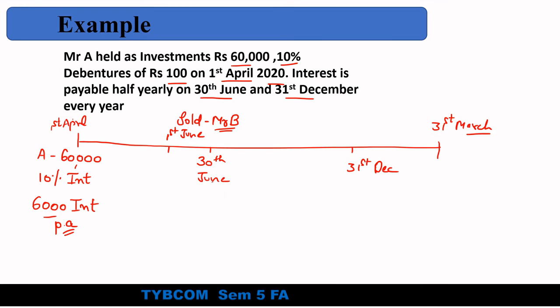Mr. B will go to the company on 30th June and the company will pay interest to Mr. B — but this is incorrect, because Mr. A held the investments for April and May (two months), while Mr. B held them for only one month, June. The total three-month interest is called accrued interest. So when Mr. A sells to Mr. B, he will collect two months' interest from Mr. B. When Mr. B goes to the company, the company pays three months' interest in full, but Mr. B had already paid two months' worth to Mr. A.